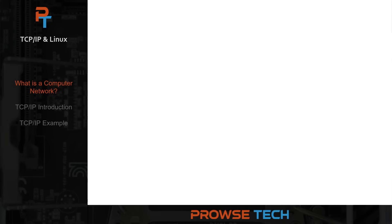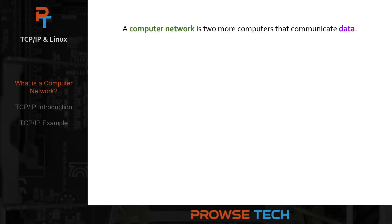What is a computer network? To me, a computer network is two or more computers that communicate with each other. And what do they communicate? Data. It's that simple.